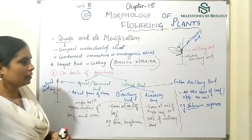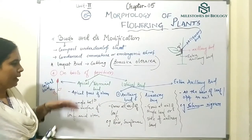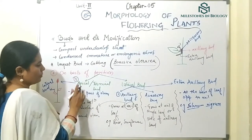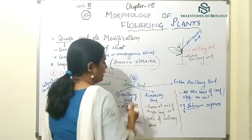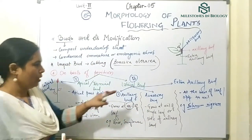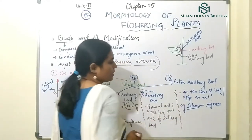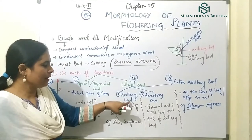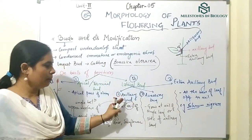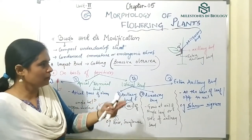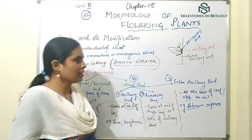So on the basis of position, buds can be of two types: apical (also called terminal bud), which grows at the apex of the stem; and lateral bud, which grows at the sides of the stem. Lateral buds are further divided into three categories: axillary, accessory, and extra axillary buds.